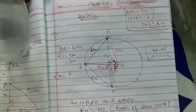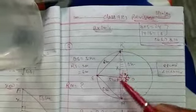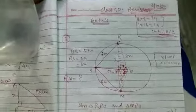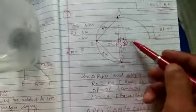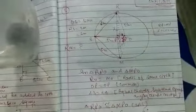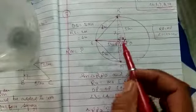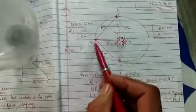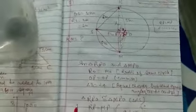सबसे पहला काम हम इसमें क्या करेंगे? हम triangle R, P, O और triangle M, P, O को congruent करेंगे। In triangle RPO and MPO: R, O equals M, O — they are radii of the same circle। O, P equals O, P — यह common है। और angle 3 equals angle 4 — यह बड़ा important है — equal chords subtend equal angles at the center, तो center पर angle 3 और angle 4 बराबर होंगे।